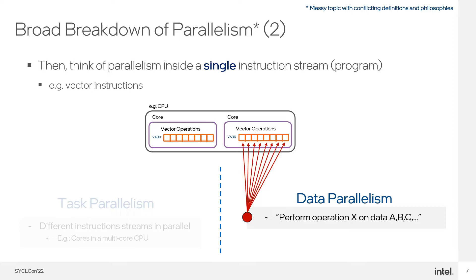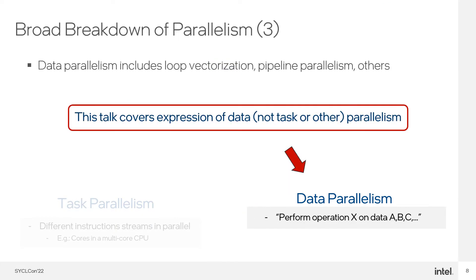Put another way, we'll define data parallelism as performing an operation X on data such as A, B, C, and so on, in parallel. Multiple forms of parallelism can be characterized as data parallel, including the pipeline parallelism that we often see on FPGAs, and even the results of loop vectorization. We'll specifically focus on data parallelism in this talk — not things like task or instruction level parallelism — because data parallelism is where most of the confusion seems to be. Features like operating system threads for task parallelism have great documentation available online.